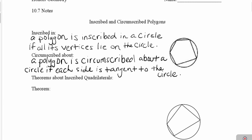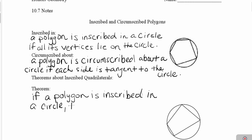So there's a couple theorems that you're going to need to know about inscribed quadrilaterals. The first one says if a polygon is inscribed in a circle, then its opposite angles are supplementary to each other.